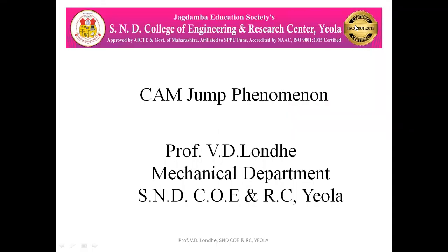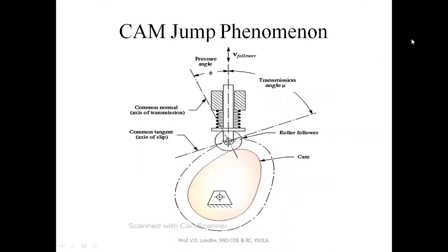Today we are going to see the cam jump phenomena and its effect. This cam jump phenomena is a non-desirable phenomenon. Here we have a radial or disc cam, and at the top side is the roller follower. The roller follower consists of a platform at the top, with a helical coil spring provided between the platform and the roller. This is the press point for the roller follower.